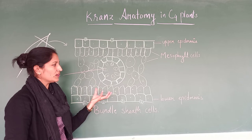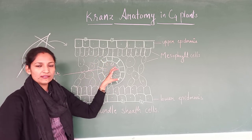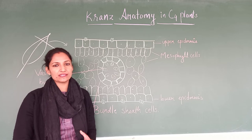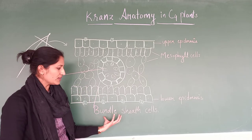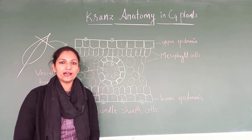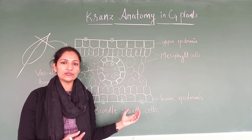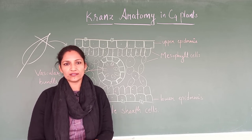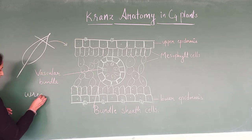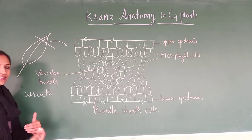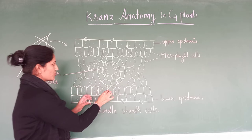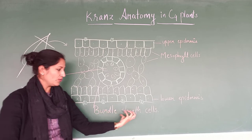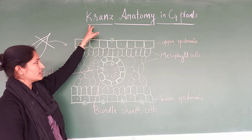Now, in the C4 plant, the special thing is this vascular bundle where the xylem and phloem are present. That vascular bundle is surrounded by a special type of cells called bundle sheath cells, and when observed, it seems that the vascular bundle is wrapped around by them. The cells wrap the vascular bundle giving an arrangement like a wreath — that is a circular arrangement. The term 'Kranz' means wreath, and this wreath means the circular arrangement of these cells. This forms a sheath, that is why it is termed as bundle sheath cells — giving rise to Kranz anatomy.